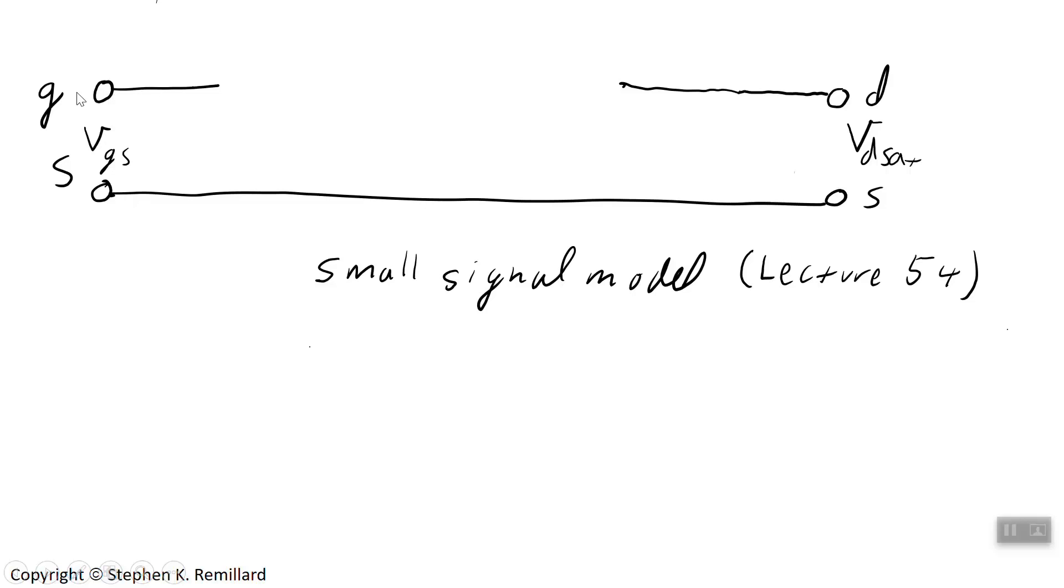If you are looking at the gate terminal, what do you see? I think what you see is the oxide capacitance and possibly depletion layer capacitance. Especially in saturation, you're going to see a lot of depletion layer capacitance, and it's going to cause this to actually be different than just oxide. We'll just keep it simple today and indicate the oxide capacitance.